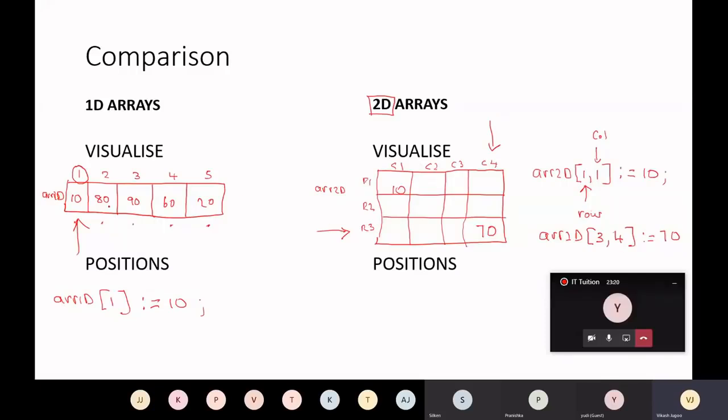So when we talk about positions or indices, the index, we're talking in the 1D array, 1, 2, 3, 4, and 5. But in a 2D array, we're now talking about 1,1, 1,2, 1,3, and 1,4. So those are the positions of each of the cells. It's two-dimensional.